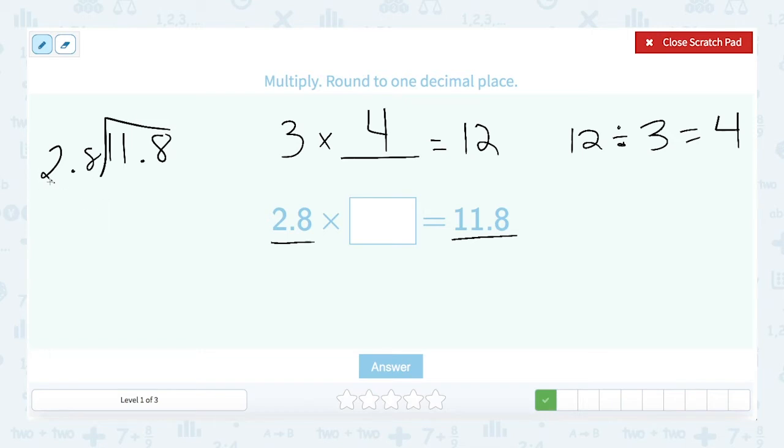Now we have a decimal here in our divisor. As a reminder in a division problem the number on the outside of the division symbol is the divisor. The one on the inside is the dividend. Whenever we have a decimal in our divisor we have to move that decimal to the end of the number. So in this case it moves over one place and we put it right there. So now instead of saying 2.8 this says 28 and however many places we move it in our divisor we have to move it the same number of places in our dividend.